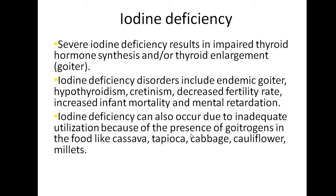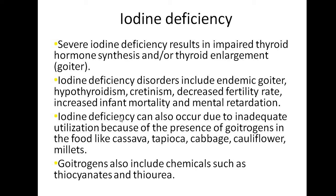Goitrogens are substances which cause goiter — that is, an increase in thyroid gland size. Foods like cassava, tapioca, cabbage, cauliflower, and millet can cause iodine deficiency. Chemicals like thiocyanates and bioflavonoids can also cause iodine deficiency.